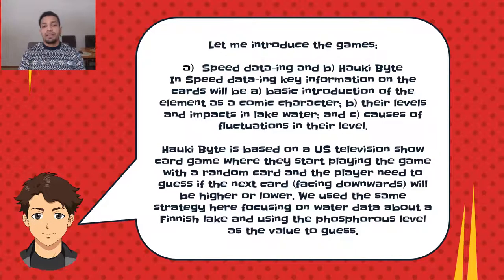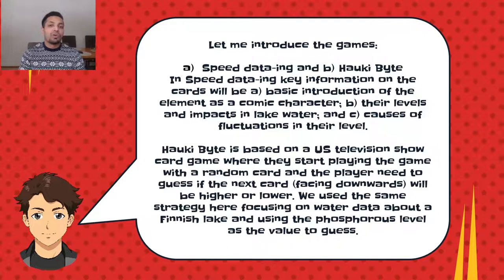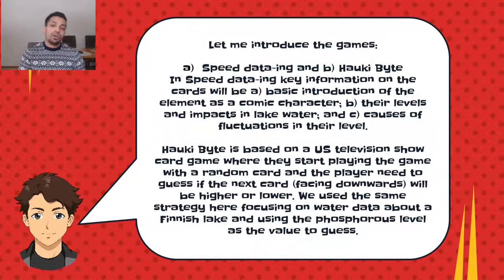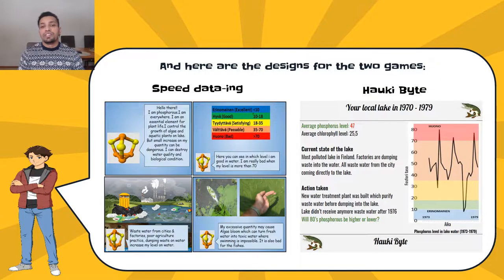Let me introduce the games. The first game is Speed Data In and the second game is Haukibai. In Speed Data In, key information on the cards includes a basic introduction of the water element as a comic character, their levels and impacts in lake water, and causes of fluctuation in their level. Haukibai is based on a US television show card game where players start with a random card and need to guess if the next card will be higher or lower. We use the same strategy here, focusing on water data. Here you can see the designs for the two games — on the left is Speed Data In and on the right is Haukibai.